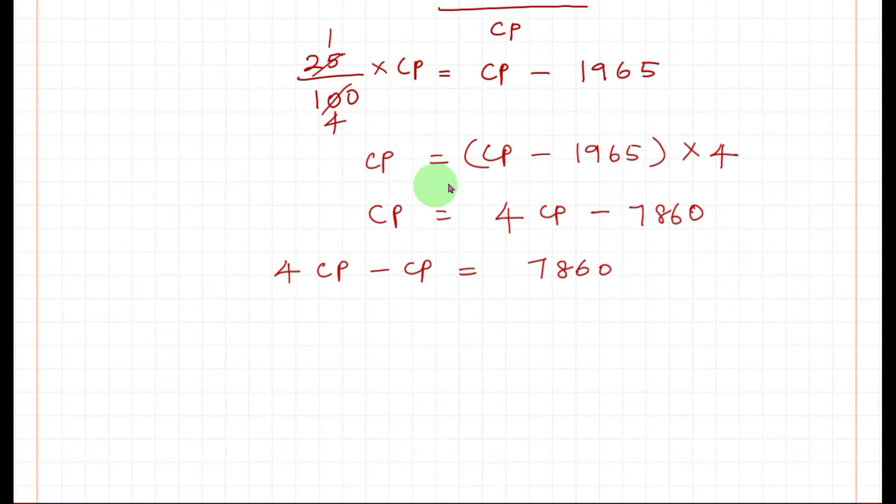Rearranging the equation, bringing CP to this side and 7860 to the other side. So 3CP equals 7860.